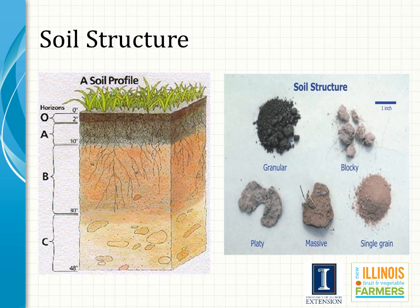Soil structure changes over the depth of the soil. In a sandy soil, you might have single grain structure — it can't form into an aggregate. With a lot of organic matter in the soil, we get finer structures such as granular structure, which tends to occur in the upper topsoil A horizon. A little below that in the subsoil, it's not uncommon to have blocky structure. Platy structure can be found as well but is more rare and typically found in forested soils.